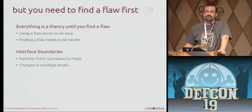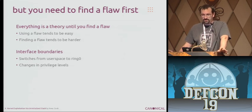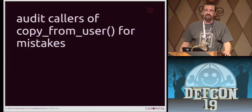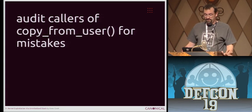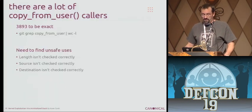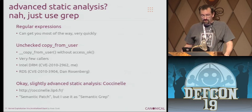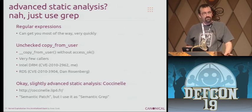But all that's unimportant if you don't have a flaw — obviously you need that arbitrary write to begin with. So I started looking at interface boundaries, where things make transitions. I was especially interested in copy_from_user, because that's where you're pulling information from user space and putting it somewhere in the kernel. Anything that goes wrong there is going to be an issue. There are a lot of callers — about 4,000 — so it was a bit daunting to start with. I'm looking for things where length isn't checked, source isn't checked, destination isn't checked. We don't really need advanced static analysis — grep will work most of the time.